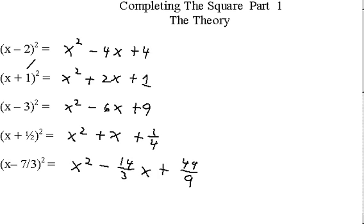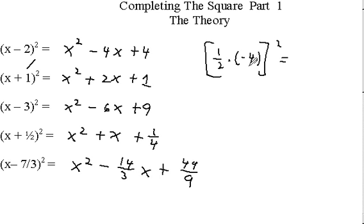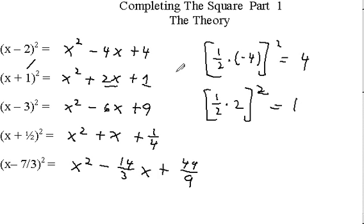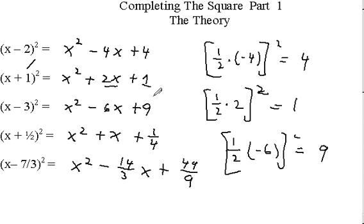Let's verify with our first example: one-half times negative four, quantity squared — one-half of negative four is negative two, and negative two squared is four. It works. One-half times two, squared, equals one. One-half times negative six, squared: negative three squared is nine. One-half of one squared is one-fourth. One-half of negative fourteen-thirds is negative seven-thirds, and negative seven-thirds squared is forty-nine-ninths. So all three observations are confirmed.